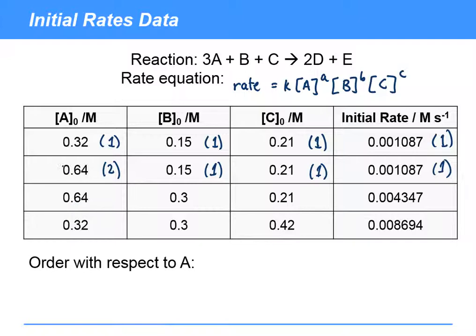But if we look between these first two rows, then what we've got here is that the concentration of A has doubled. Now what's happened to the rate of reaction? Well, it's gone from being essentially 1 to being 1. It hasn't changed.